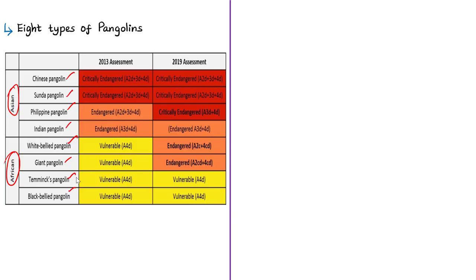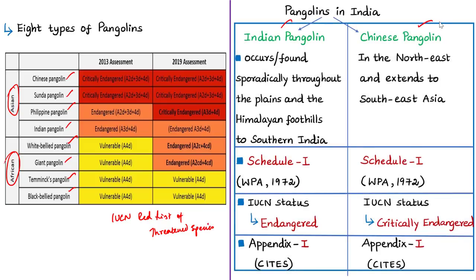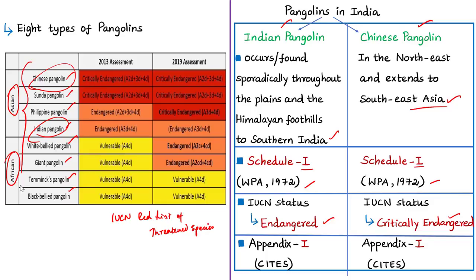Two species of pangolins are found in India: the Indian pangolin and the Chinese pangolin. The Indian pangolin occurs throughout the plains and Himalayan foothills to southern India, while the Chinese pangolin is found in the northeast and extends to Southeast Asia. Both species are listed under Schedule 1 of the Wildlife Protection Act of 1972. The Indian pangolin's IUCN status is endangered, and the Chinese pangolin is critically endangered. Appendix 1 of CITES includes species threatened with extinction, where trade is permitted only in exceptional circumstances.